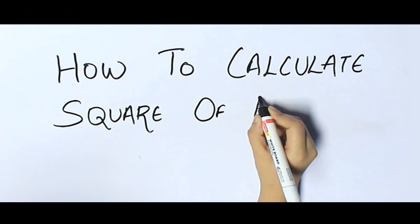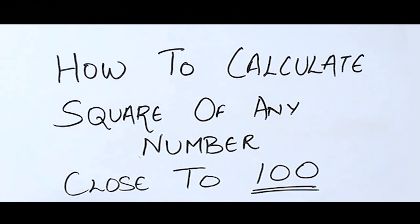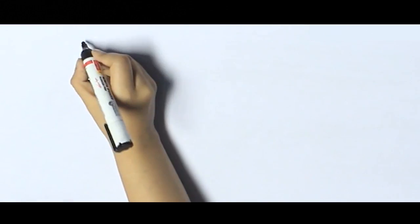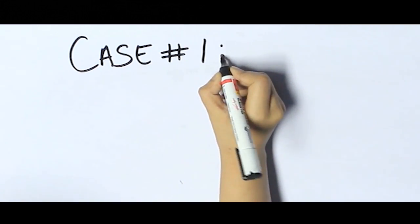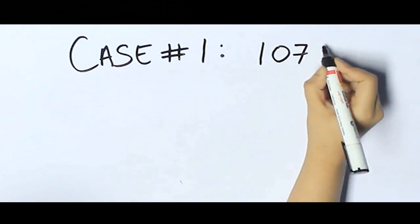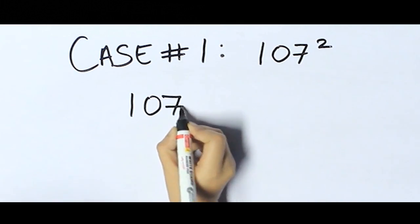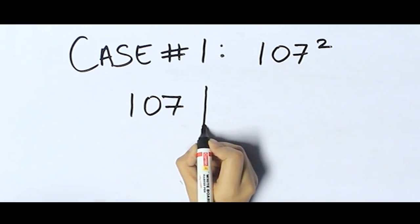We'll learn this with the help of three cases. Case number one: square of 107. For this, we'll first write 107, the number whose square has to be calculated. Subtract this with 100, this will give us plus 7.